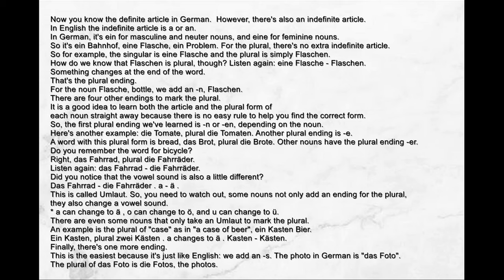Did you notice that the vowel sound is also a little different? 'Das Fahrrad' — 'Die Fahrräder': A → Ä. This is called Umlaut. So you need to watch out — some nouns not only add an ending for the plural, they also change a vowel sound. A can change to Ä, O can change to Ö, and U can change to Ü.